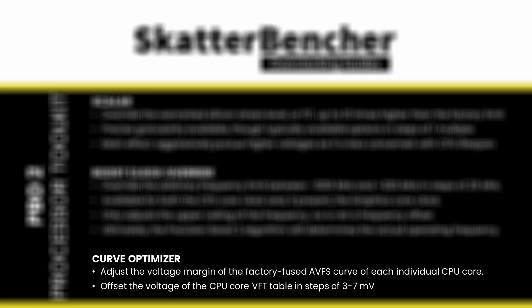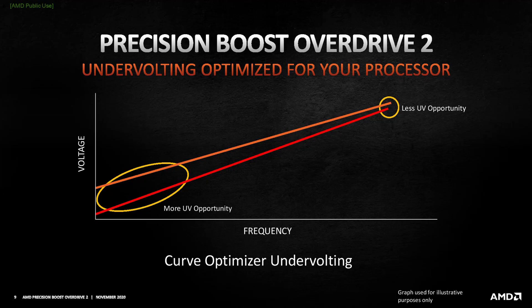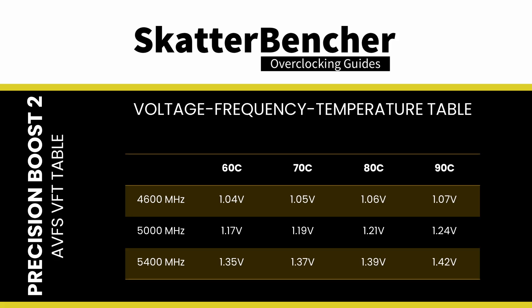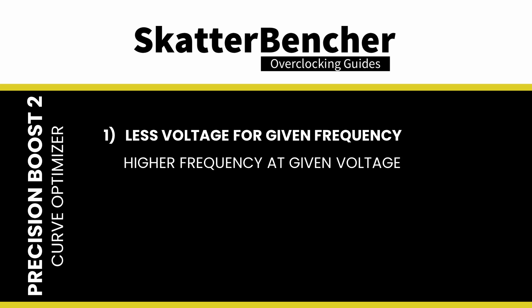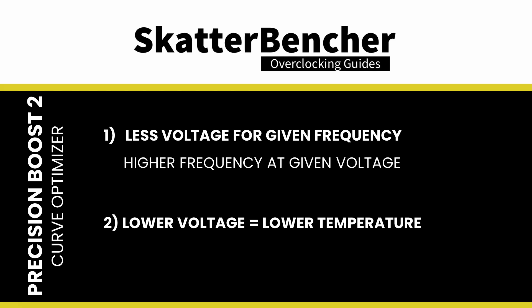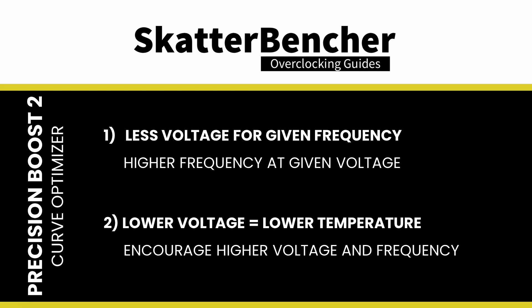Curve Optimizer is a tool that allows the user to adjust the voltage margin of each individual CPU core. It does this by offsetting the CPU Core VFT, or Voltage Frequency Temperature Table. The VFT table is a unique lookup table for each core inside your CPU that defines the required voltage for a given frequency at a given temperature. Higher frequencies or higher operating temperatures require higher voltage. The traditional approach for overclocking AMD Zen CPUs is to use a negative Curve Optimizer. When you use a negative Curve Optimizer, first, you tell the CPU that it needs less voltage for a given frequency, and as a consequence, at a given voltage it can apply a higher frequency. Second, the CPU temperature will be lower because you use less voltage at a given frequency. That extra thermal headroom will also encourage the Precision Boost algorithm to target higher voltages and frequencies.